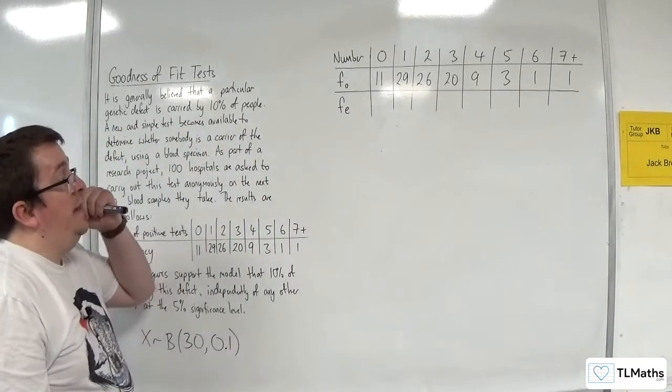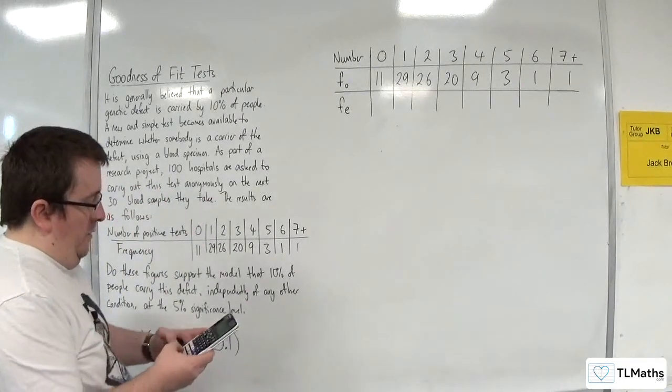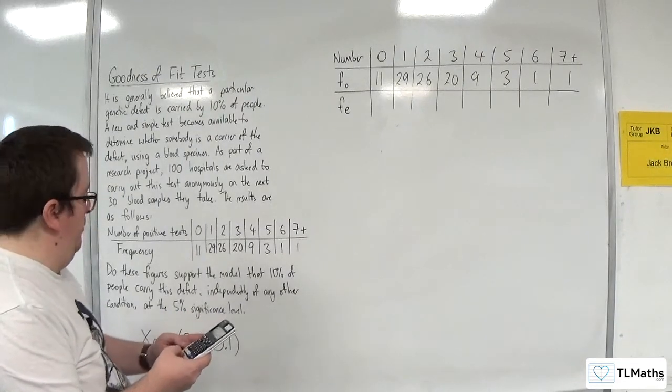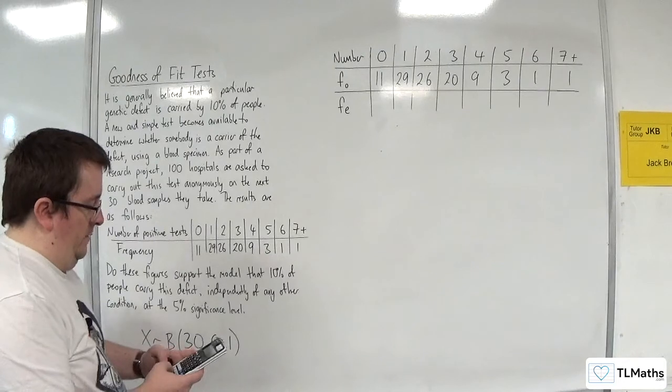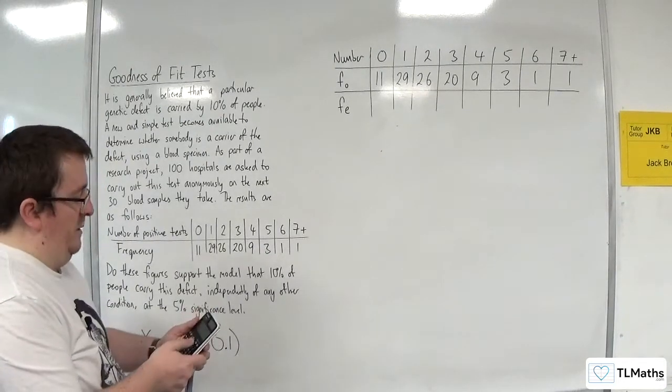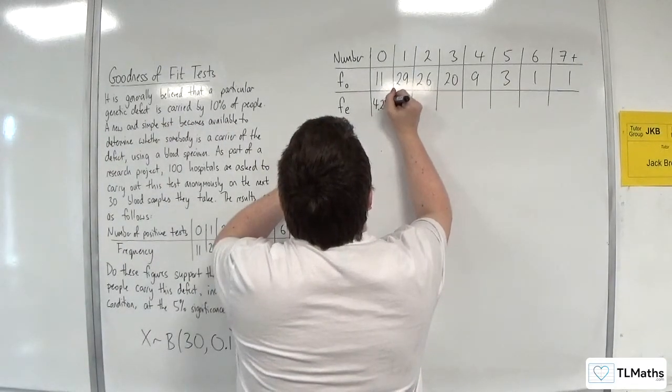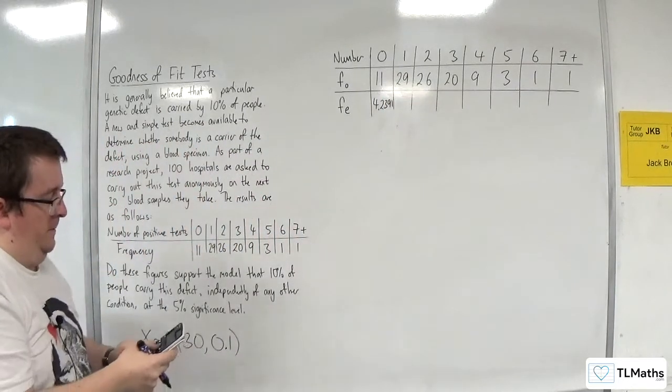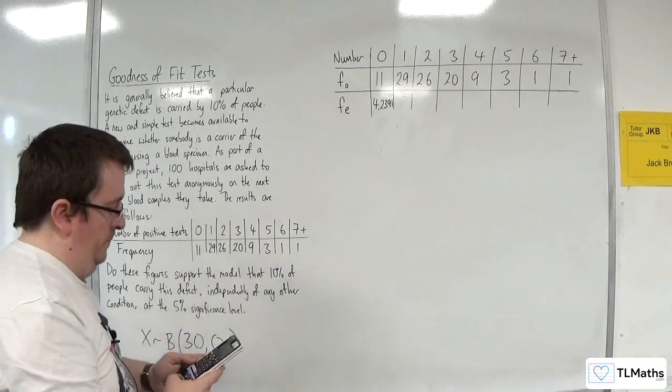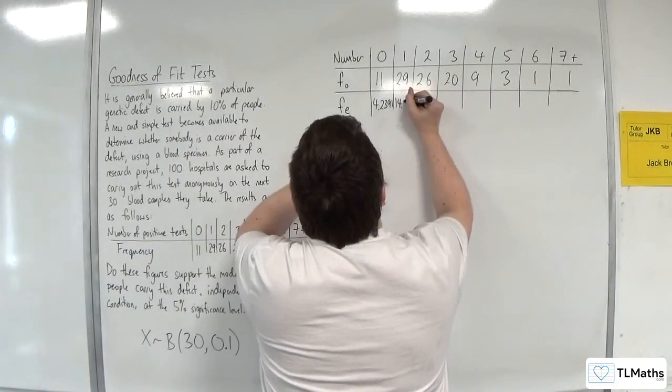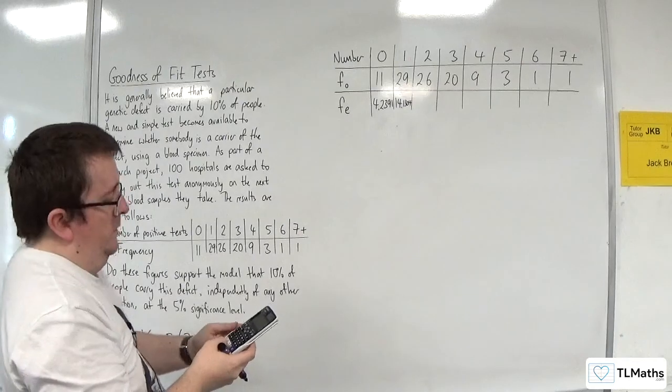So I need the binomial probability and then need to multiply it by 100. So I'm going to use the formula. We've got 30 choose 0 times by the probability of success which is 0.1 to the power of 0 times by the probability of failure 0.9 to the power of 30. And then I'm going to times that by 100. So we get 4.2391. Let's change it over to 1, and that would be 14.1304.